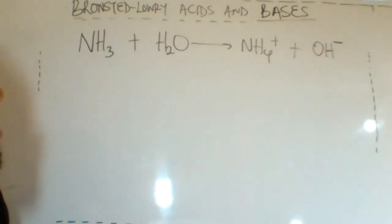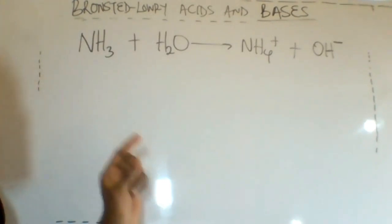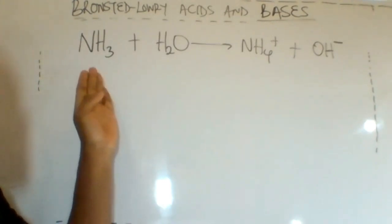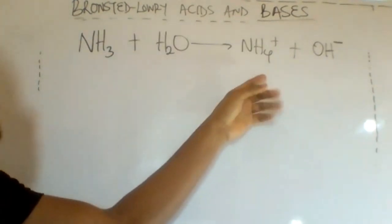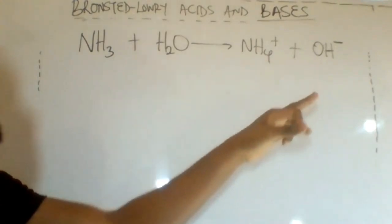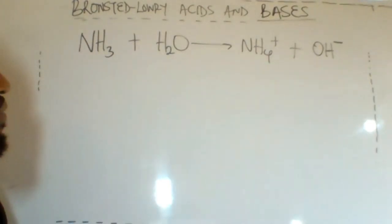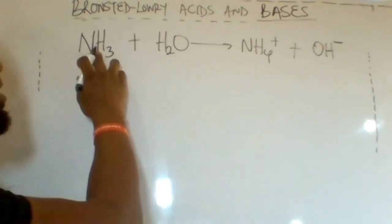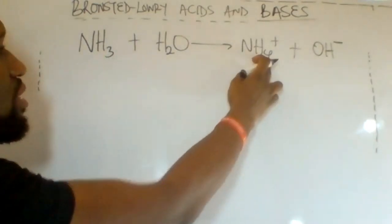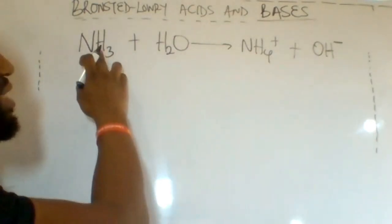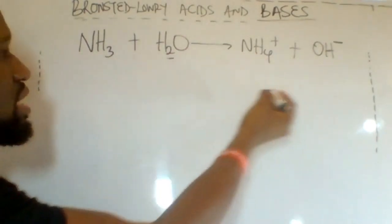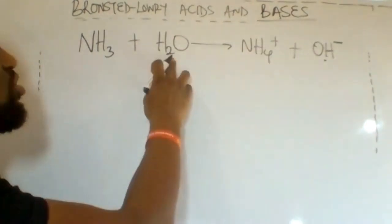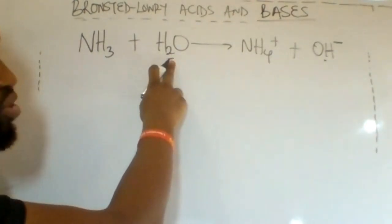Now let's see another example. In the reaction between ammonia and water, ammonium ion and hydroxide ions are formed. NH₃ becomes NH₄⁺, meaning it gained a proton. But H₂O became OH⁻, meaning H₂O lost a proton.